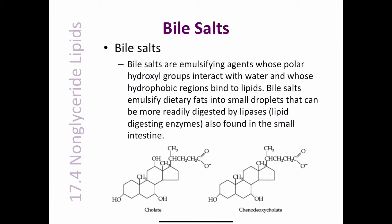Bile salts are amphipathic derivatives of cholesterol that are synthesized in the liver and stored in the gallbladder. The principal bile salts in humans are cholate and chenodeoxycholate. Bile salts are emulsifying agents whose polar hydroxyl groups interact with water and whose hydrophobic regions bind to lipids. Following a meal, bile flows from the gallbladder to the duodenum, the uppermost region of the small intestine, where the bile salts emulsify dietary fats into small droplets that can be more readily digested by lipases found in the small intestine.